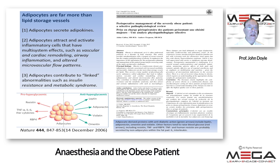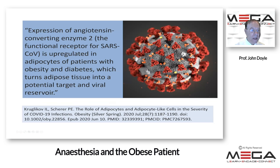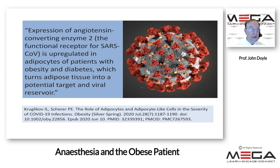This is important because it deals with the role of adipocytes in COVID-19. From the journal Obesity, a key statement reads: expression of angiotensin-converting enzyme — the functional receptor for the COVID-19 virus — is up-regulated in adipocytes in patients with obesity and diabetes, which turns adipose tissue into a potential target and viral reservoir. That is the link between obesity and the predisposition to catching COVID-19.